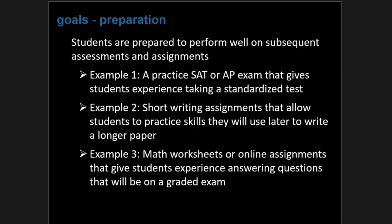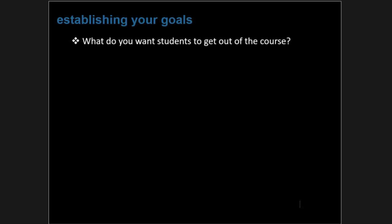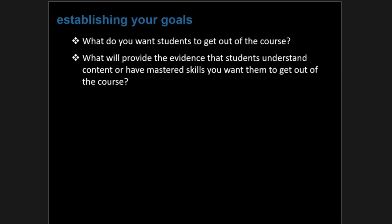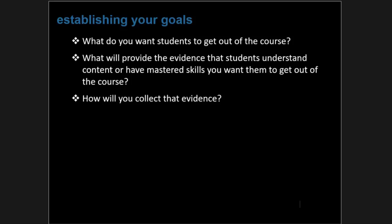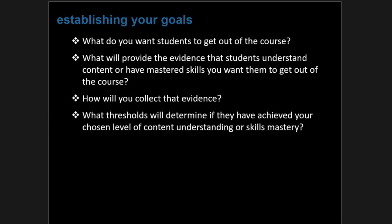As you are putting together your goals, you should ask yourself a set of questions. First, what do you want students to get out of the course? Once you understand that, you need to ask what's going to provide the evidence that students understand content or have mastered the skills you want them to acquire. With that in mind, you can ask how you are going to collect that evidence. And finally, what thresholds will determine if they've achieved your chosen level of content understanding or skills mastery?